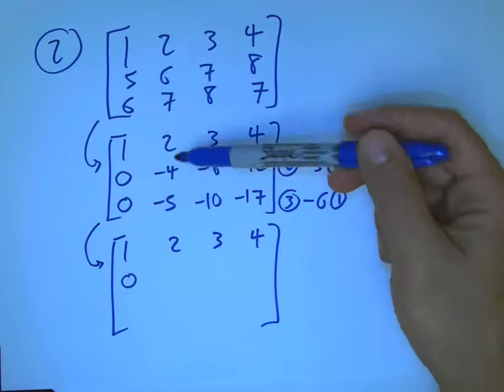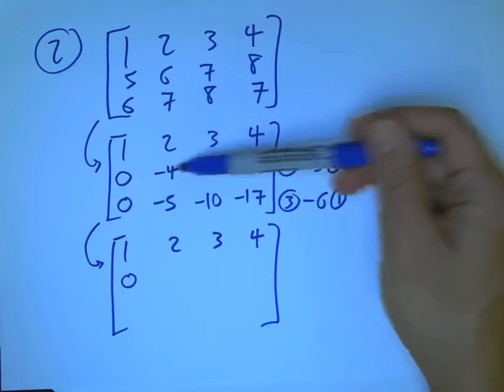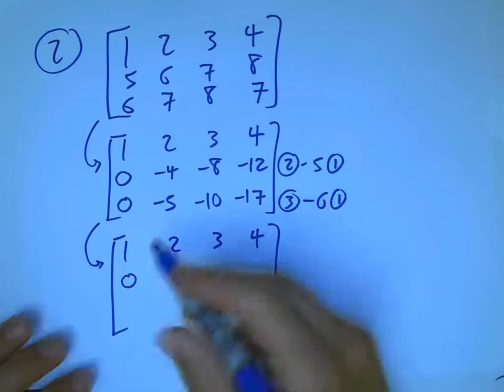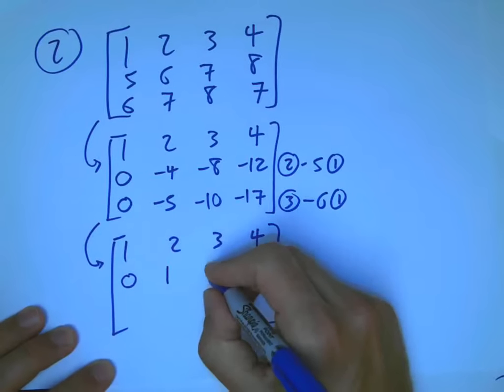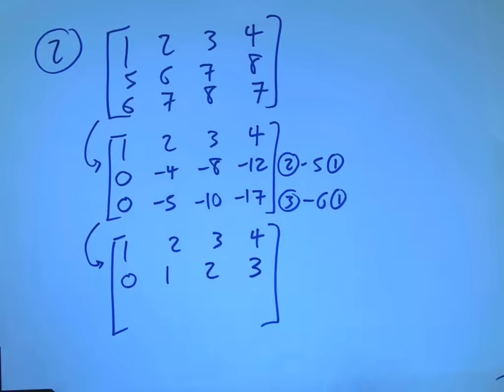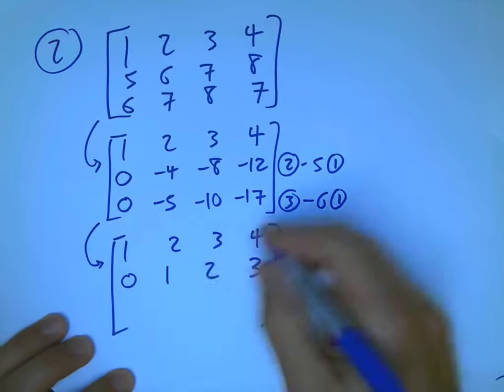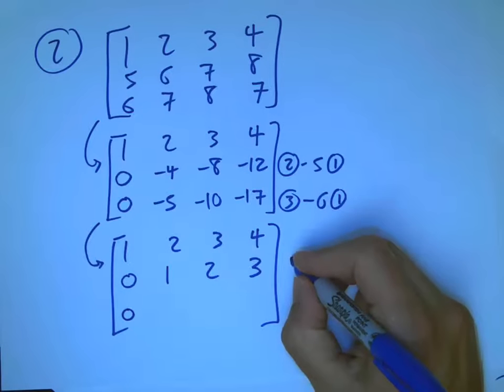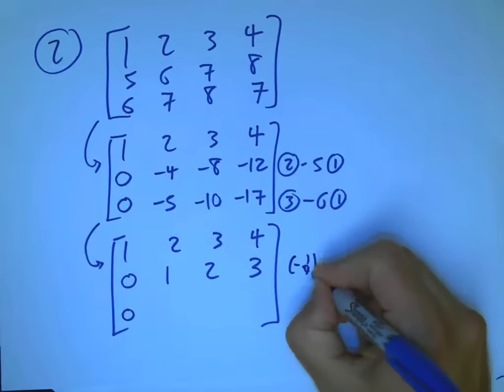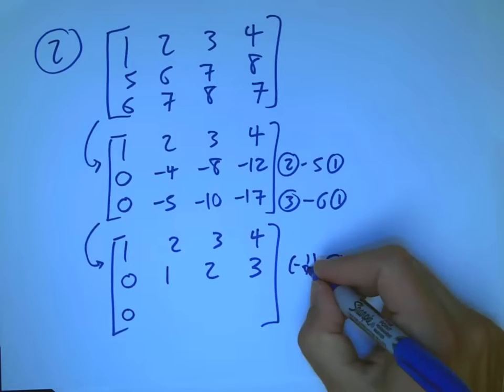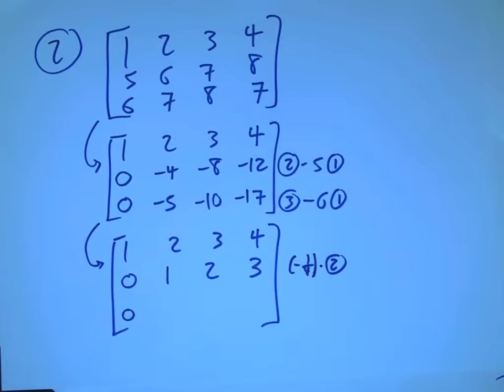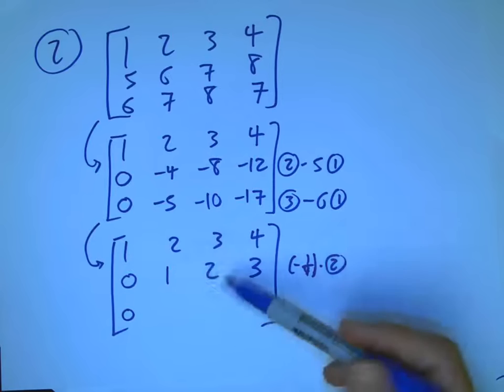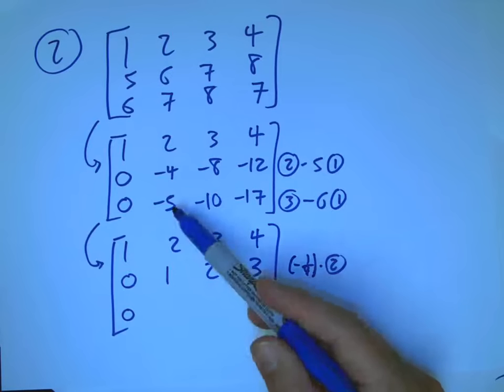And there is a situation where that's pretty smart. If these guys are all divisible by the pivot, then go ahead and divide by that. Again, there's a lot of things where you can try to be clever where it's maybe not worth it because it kind of gets you out of the pattern. But that's a pretty good example of something that's worth doing.